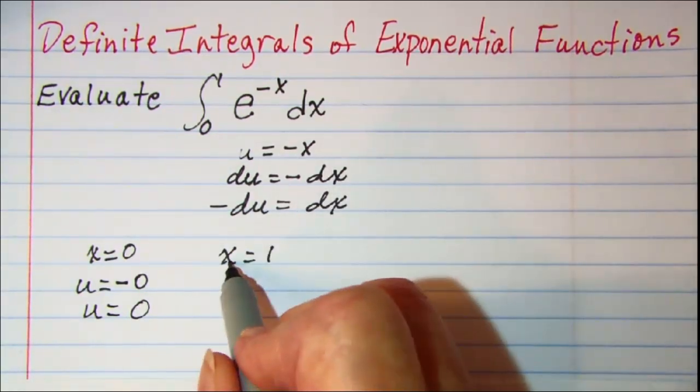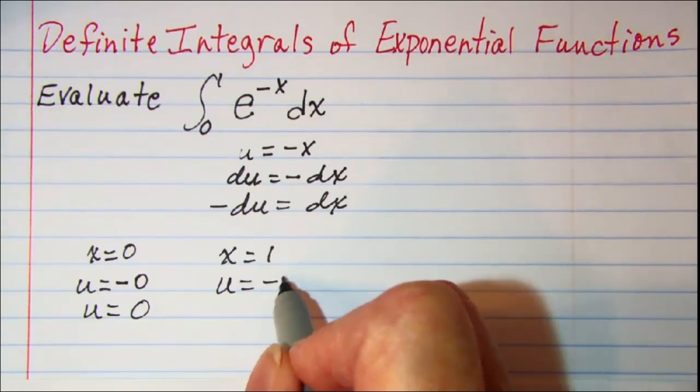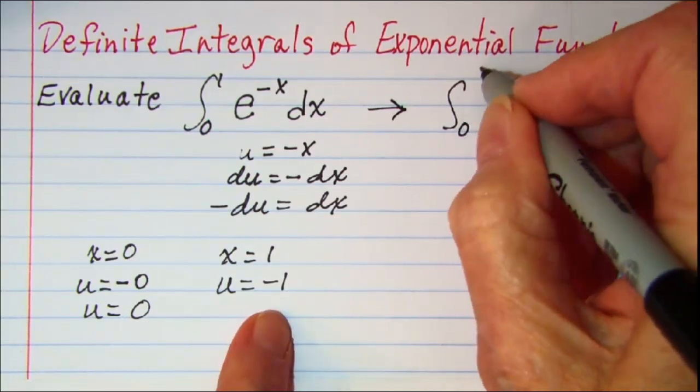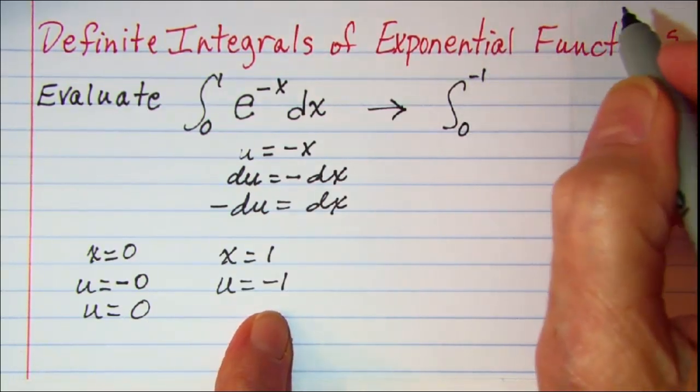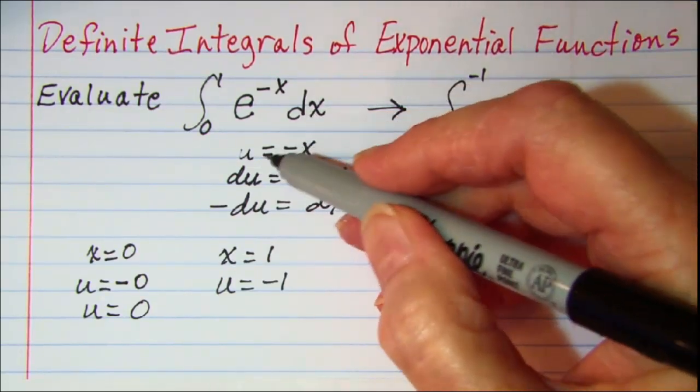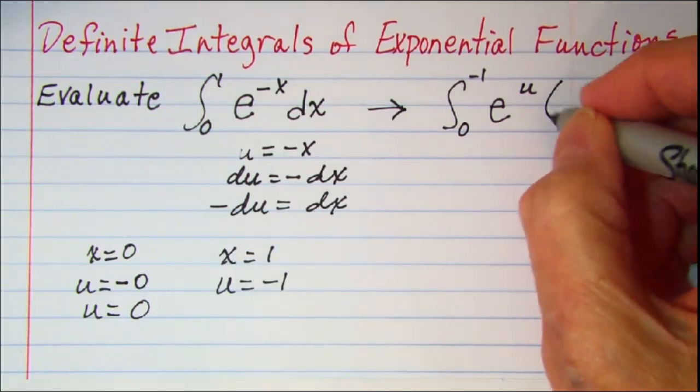And then on this one, u equals negative 1. This is going to become the integral from 0 to negative 1 of e to the u. And then in place of dx we'll put negative du.